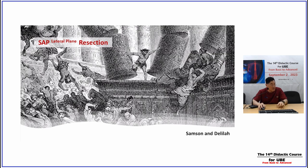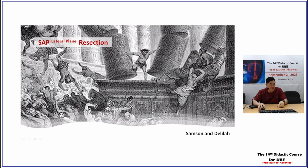When you sacrifice to solve this problem by accessing the transforaminal approach and excising the superior articular process fully, the disc height collapses. The coronal tilting and far-out syndrome becomes aggravated, disc height collapses further, and the L5S1 root can be impinged under the lateral recess if there is a spur. Sacrificing the SAP lateral facet fully is like the story of Samson and Delilah — when you excise the lateral facet in any transforaminal approach, you collapse the whole situation and the outcome is also lost.